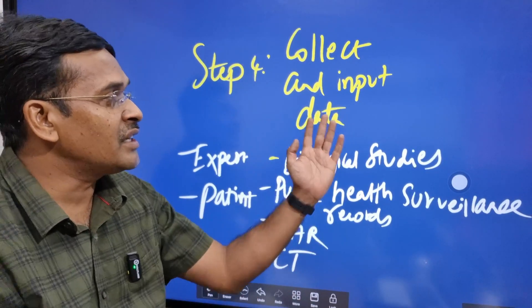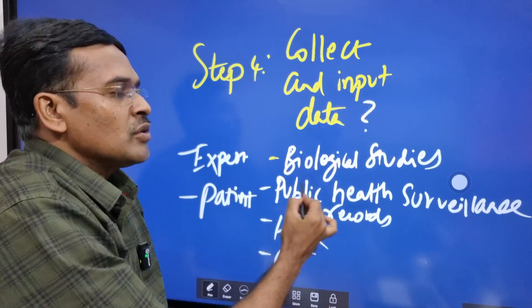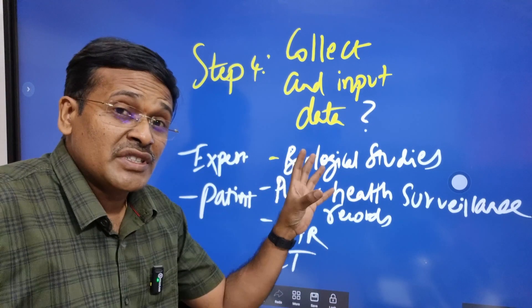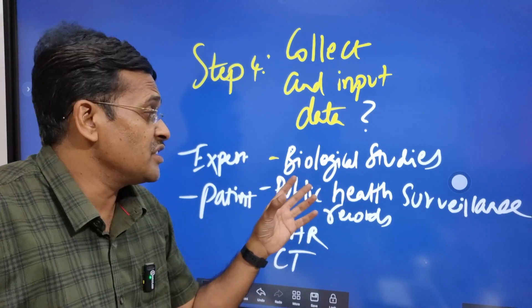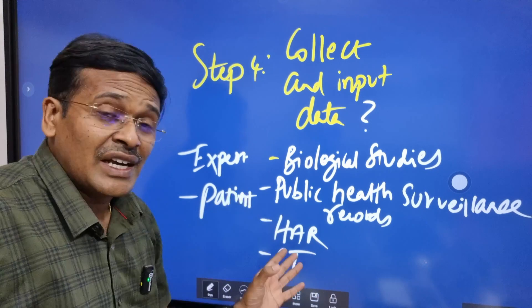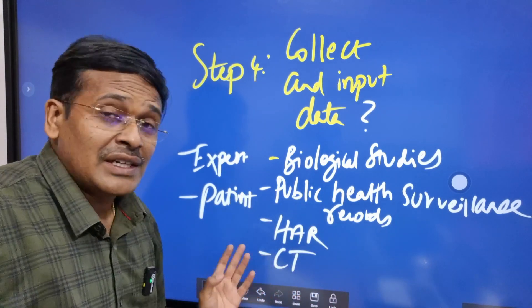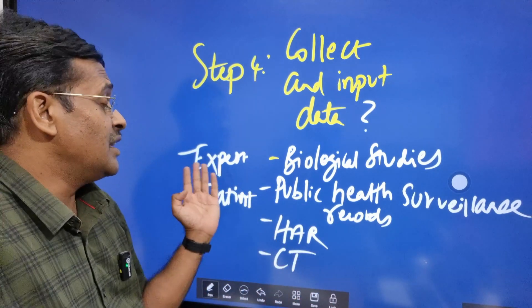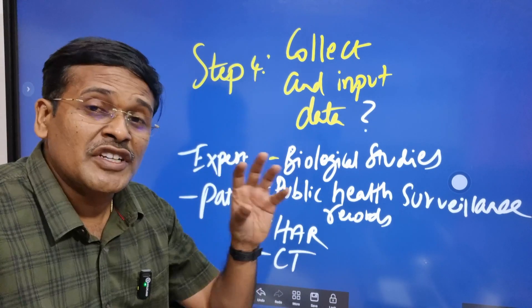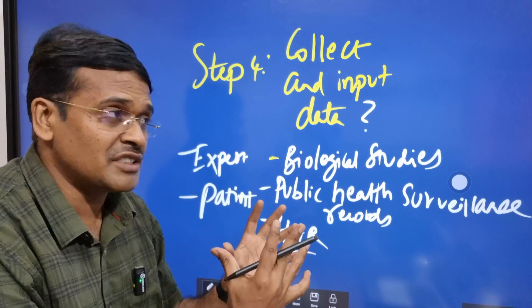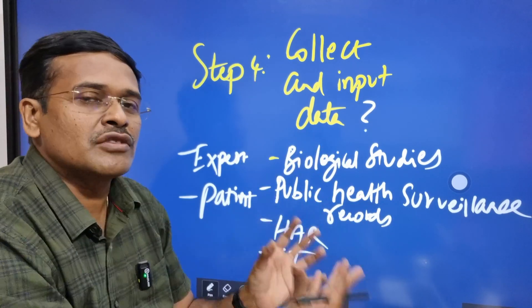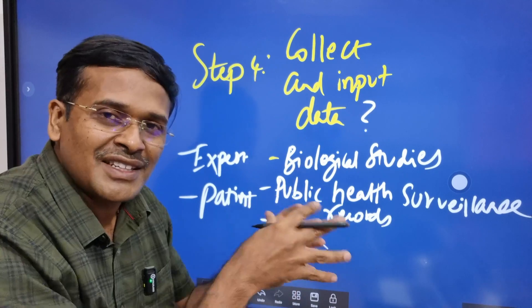Step four is collecting and inputting data. What data should be used here? The data regarding biological studies conducted regarding syphilis, public health surveillance records regarding syphilis, health administration records, results from clinical trials, expert opinions from those treating syphilis patients, and syphilis patient experiences — all these things will go into the model. These are already available records that we put into the model as input data.